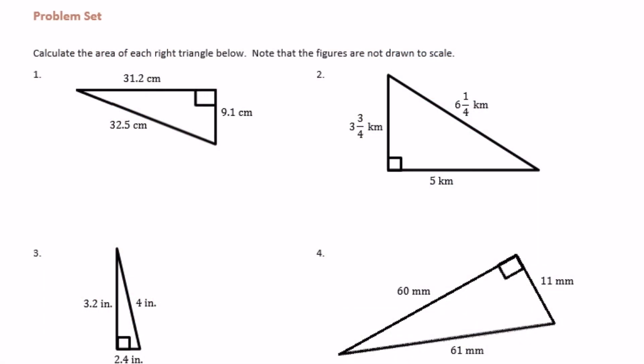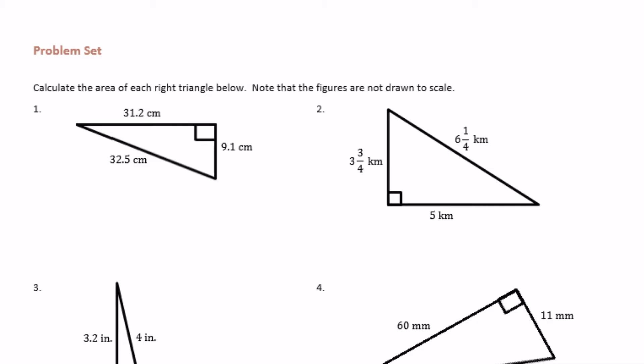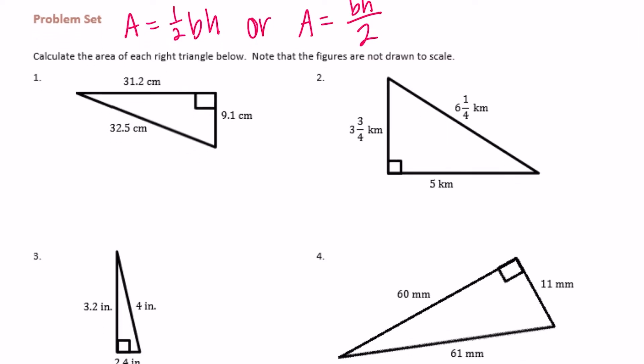Sixth grade Module 5, Lesson 2 problem set, number 1: calculate the area of each right triangle below. Note that the figures are not drawn to scale. Remember the area of a triangle is equal to one half base times the height, or base times height divided by 2 — whichever works better. You can just remember one formula and it always works.